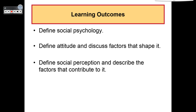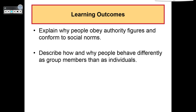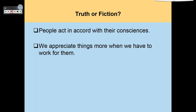We are going to define social psychology, define attitude and discuss factors that shape it. We will define social perception and describe the factors that contribute to it. We will explain why people obey authority figures and conform to social norms and describe how and why people behave differently as group members than as individuals.